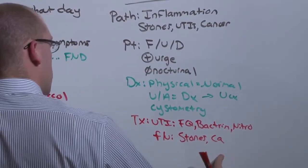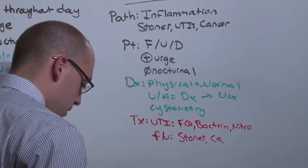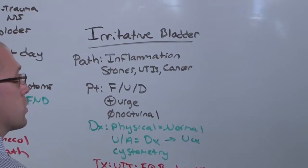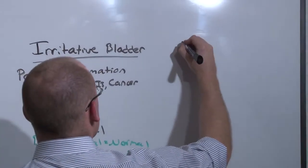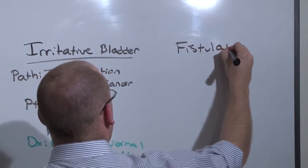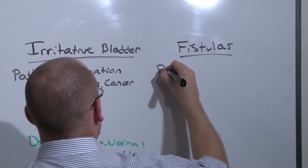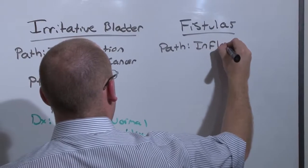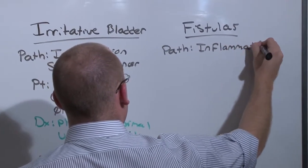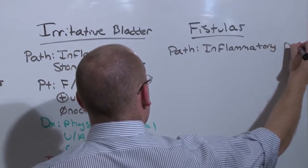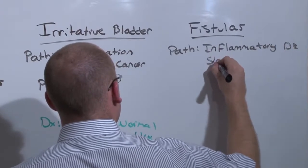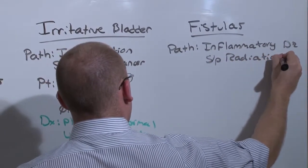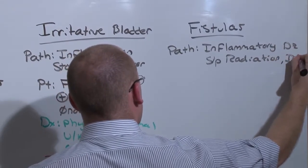And the last cause of incontinence is going to be fistulas. And fistulas occur in inflammatory diseases. It is usually status post radiation or an irritable bowel disease, like Crohn's.